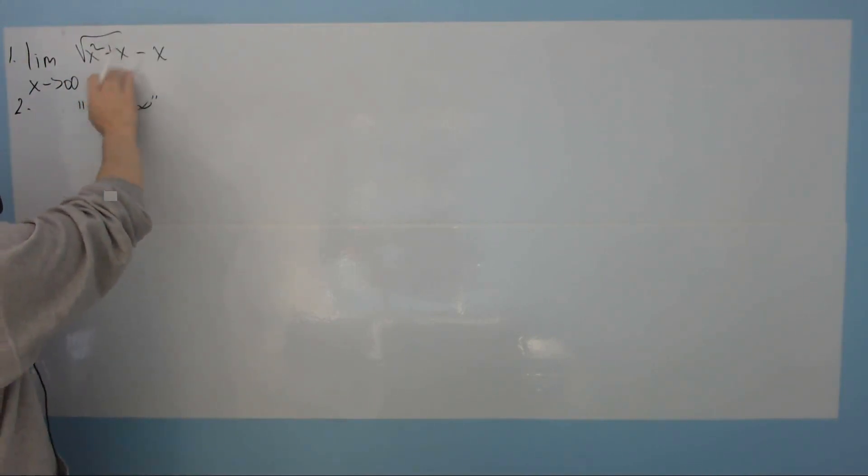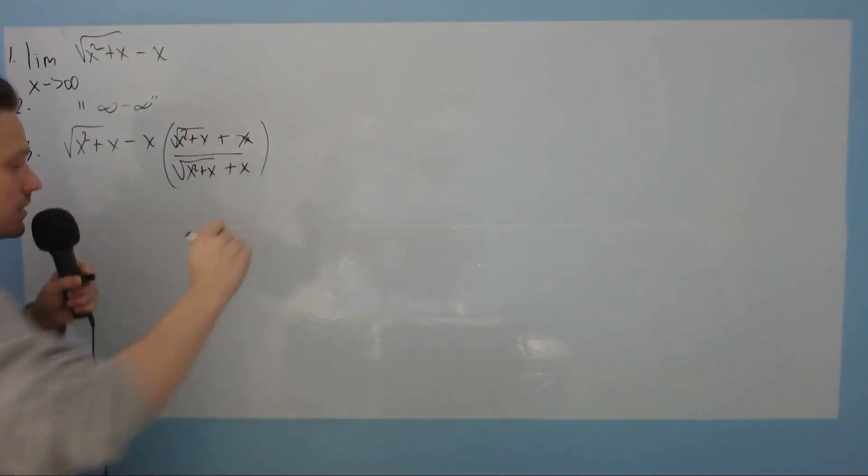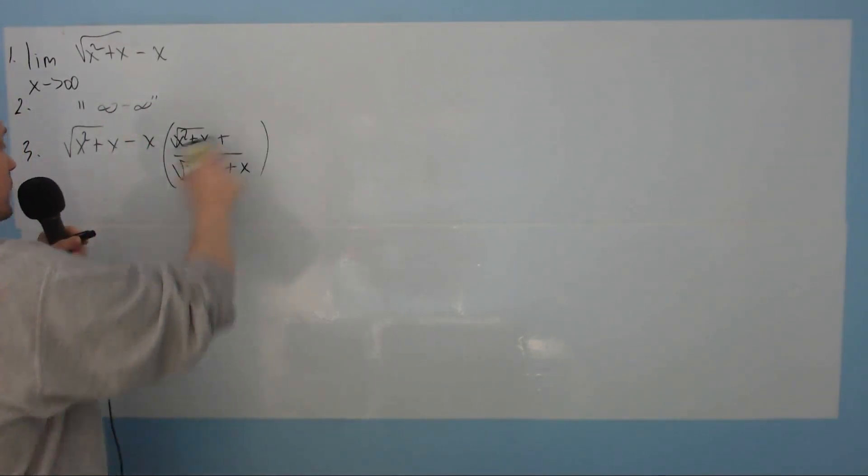This expression right here, I'm going to rewrite it. So first, I'm going to say square root of x squared plus x minus x, and you multiply this by a form of the number 1. So it looks like square root of x squared plus x plus x over square root of x squared plus x plus x. So remember, what I've just written there on the board is just a form of the number 1.